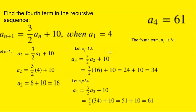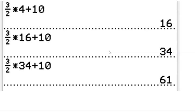If you were doing this on a TI-84 calculator, you'd type 3/2 times 4 plus 10 to get 16. Then copy and paste, putting 16 where the 4 was, to get 34. Then put 34 where the 16 was to get 61. That's how you perform the sequence on a calculator.